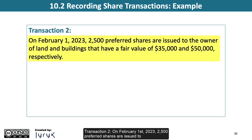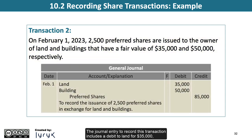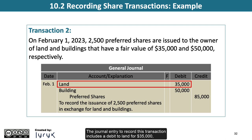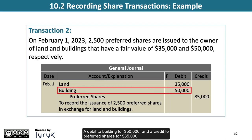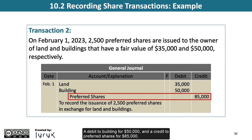Transaction 2. On February 1, 2023, 2,500 preferred shares are issued to the owner of land and buildings that have a fair value of $35,000 and $50,000, respectively. The journal entry includes a debit to land for $35,000, a debit to building for $50,000, and a credit to preferred shares for $85,000.